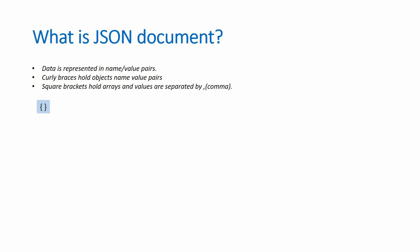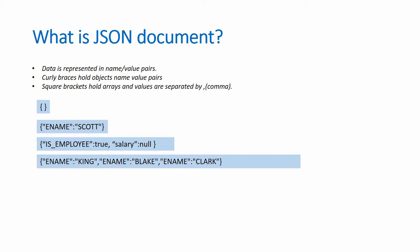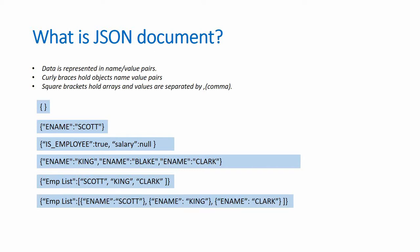A simple empty JSON can be represented with two curly braces. Here is a very simple JSON document which has an employee name and the name of the employee. Here is another JSON document where the first attribute is a boolean value and the second is a null value. Another JSON document where we have a list of name-value pair attributes, and another where the values are represented as an array. Arrays are enclosed within square braces and the values are separated by comma. In fact, the array can have a sub JSON document as shown here.